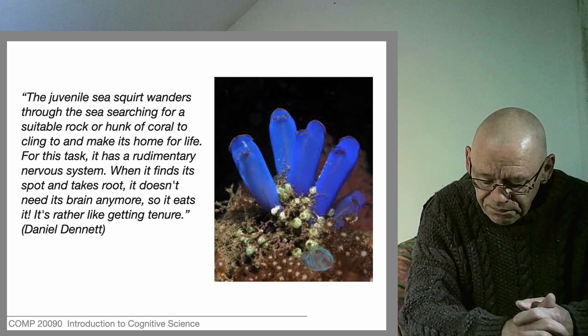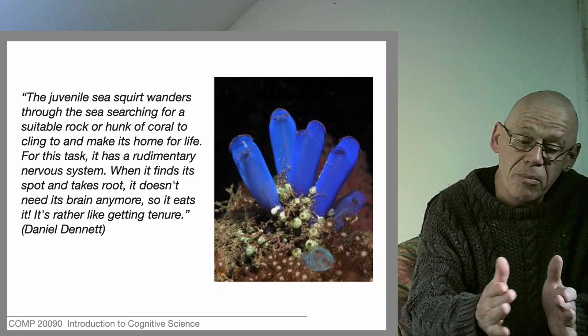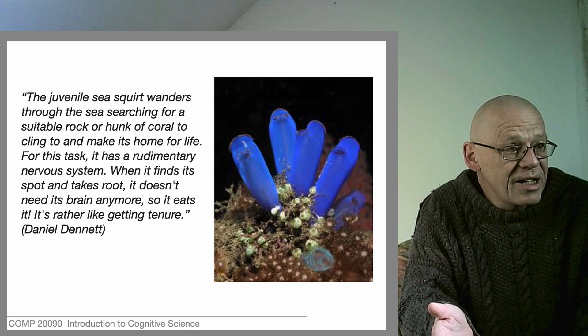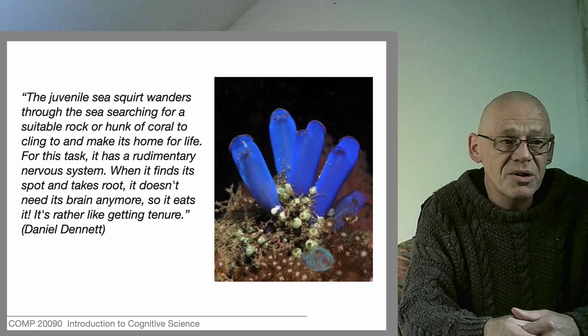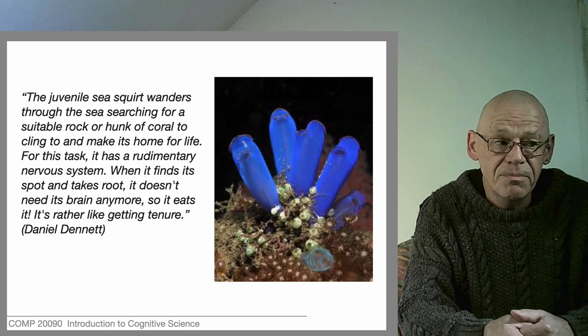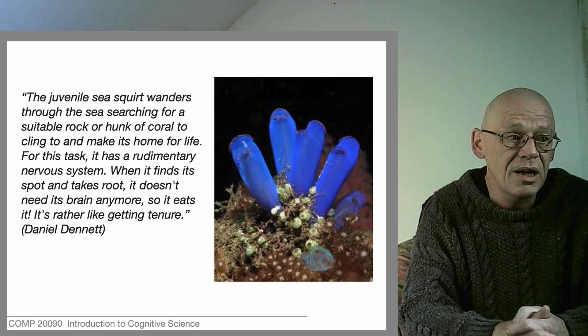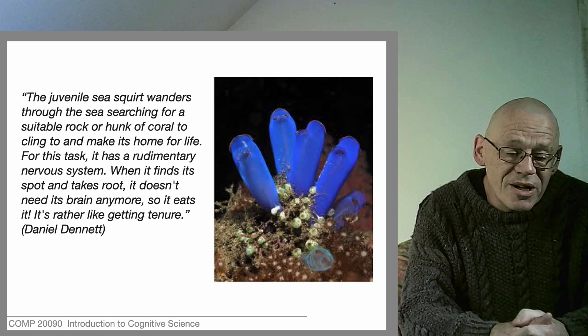Here's an interesting animal of similar complexity to a jellyfish, it's a sea squirt. As philosopher Daniel Dennett describes it, the juvenile sea squirt wanders through the sea searching for a suitable rock or hunk of coral to cling to and make its home for life. For this task it has a rudimentary nervous system. When it finds its spot and takes root, it doesn't need its brain anymore so it eats it. It's rather like getting tenure.